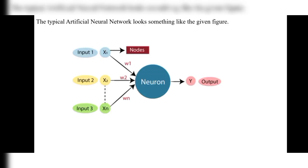In the artificial neural network diagram, we are giving Input 1, Input 2, and Input 3, considered as x1, x2, and xn. For each of these inputs we assign weights w1, w2, and wn. These x1, x2, xn values are called nodes, interconnected to each other. After assigning the weights, they connect to a neuron which produces an output y.